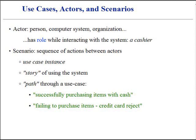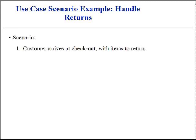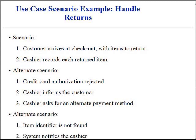A use case is a collection of related success and failure scenarios that describe actors using a system to support a particular function. For example, a customer comes at a checkout with items to return to the store, and the cashier uses the system to record each returned item. An alternate scenario is if the credit authorization is rejected, inform the customer and ask for an alternate payment method. Another alternate is if the item identifier is not found in the system, notify the cashier and suggest manual entry of the identifier code — perhaps the identifier code is corrupted on the customer's receipt.